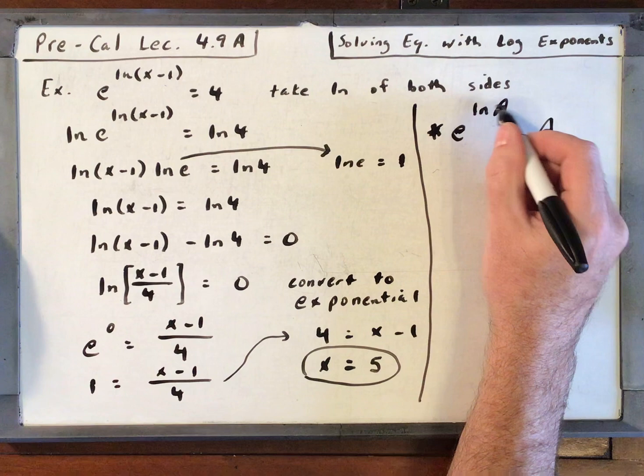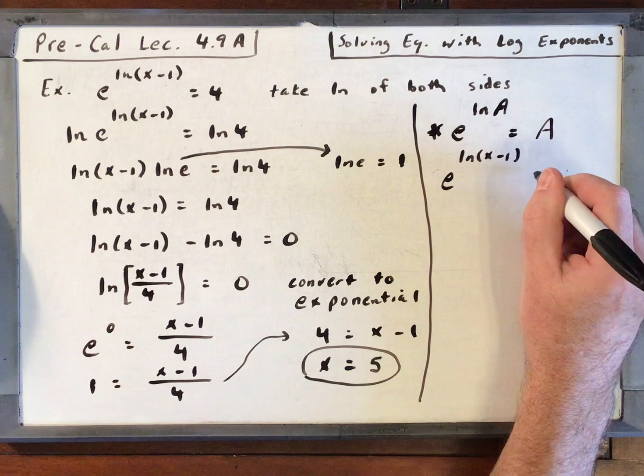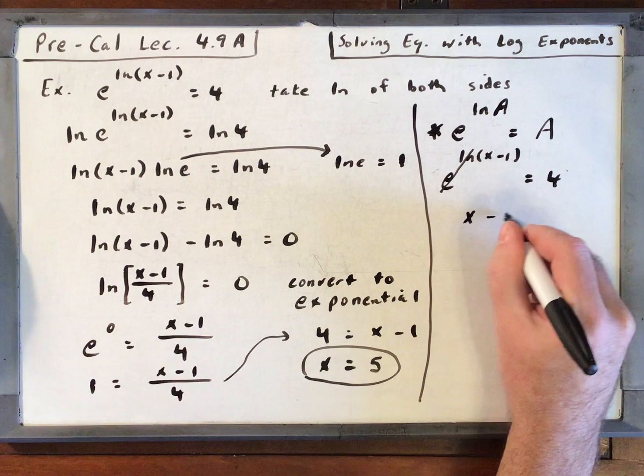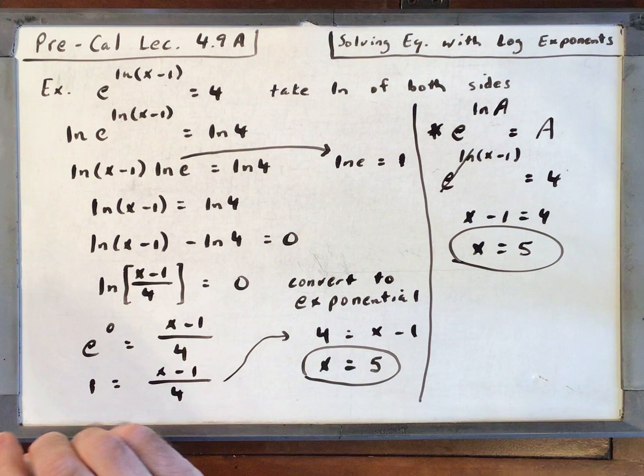We have a similar situation here. We have e to the natural log of x minus 1 is equal to 4. Well, e to the natural log of x minus 1 is just x minus 1. These two cancel each other out. So I have x minus 1 is equal to 4, so x equals 5. If you can remember this formula, it will save you all this work. But I did want to show you how to do it the long way.